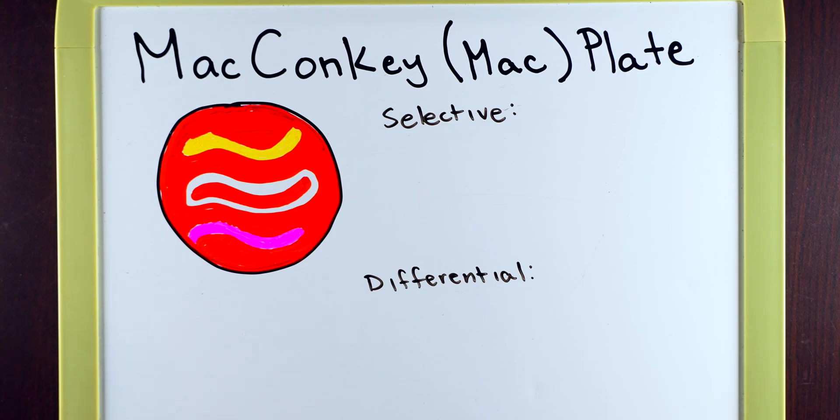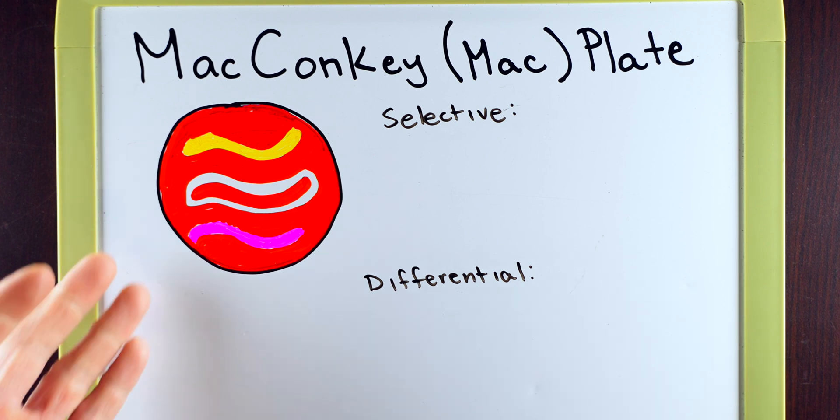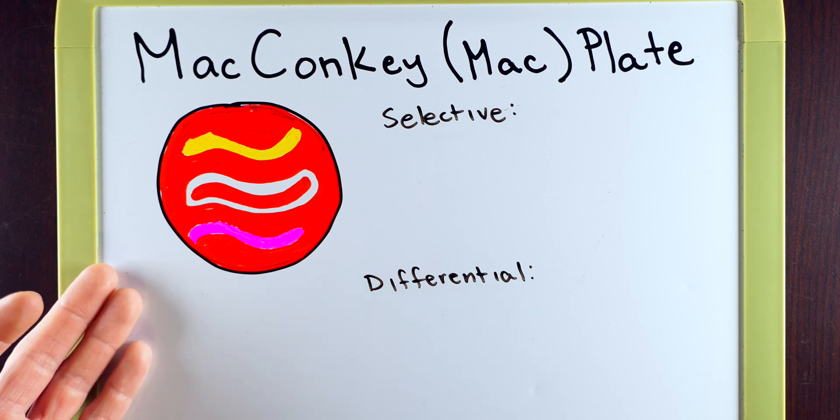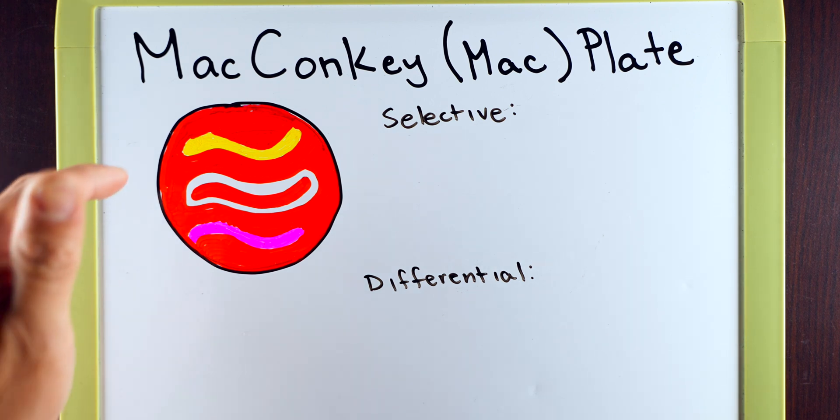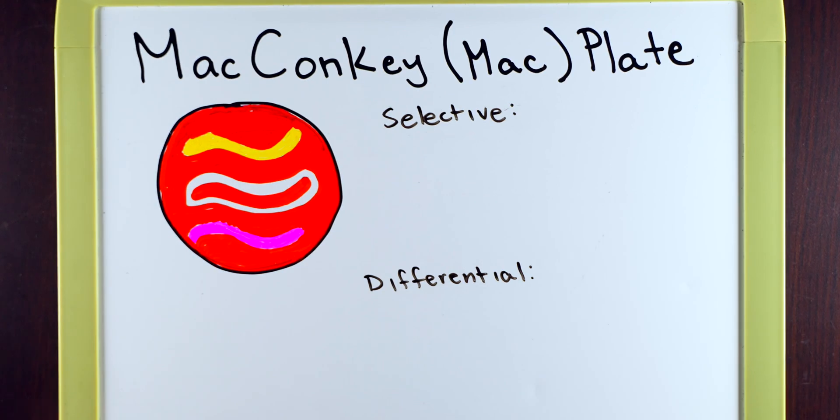Before we get into what these two things mean, let's first look into the procedures of how you're going to do this lab. It's actually very simple. You're going to be given this plate which has this red pigmentation to it and all that you're going to be doing is streaking three different bacteria across it with a q-tip just like this. Pretty simple, just using aseptic transfer.